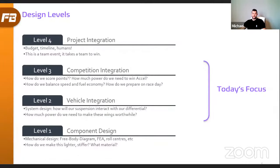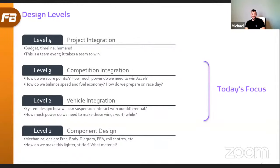Level three is competition integration. This is where we assess the objectives of the competition — namely to score points — and determine what type of vehicle we need to achieve that objective. We ask: how do we score points? How much power do we need to excel? What kind of suspension do we need to perform well in autocross or endurance? How do we balance speed and fuel economy? And critically, how do we prepare for the race?